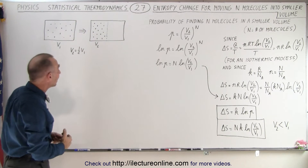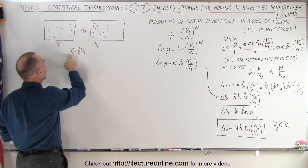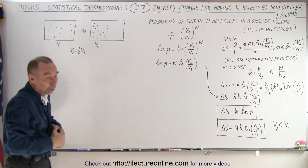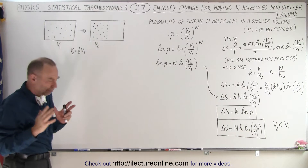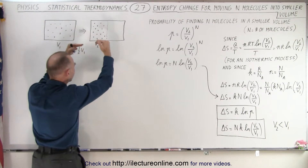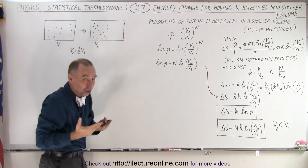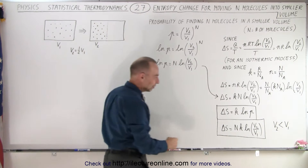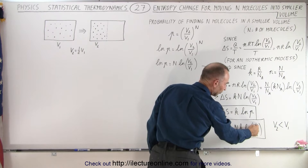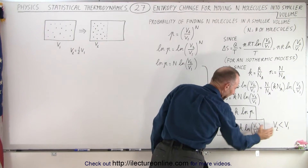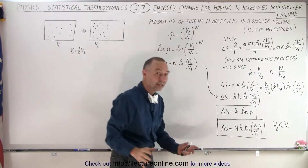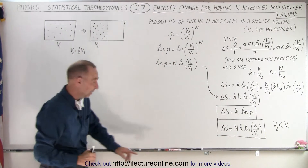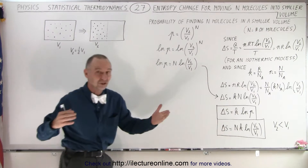In our example, V2 — the final volume — is half the volume that the molecules were in before. Going from the larger to the smaller volume requires an entropy change, and so we have a drop in entropy; the entropy change will be negative. Notice that there's a factor of the natural log of the ratio of the volumes, and if V2 is smaller than V1, the natural log of a number smaller than one will indeed be negative, so the sign for the entropy change is correct.